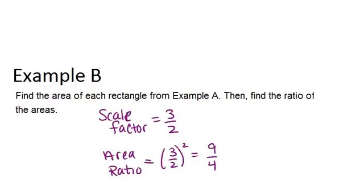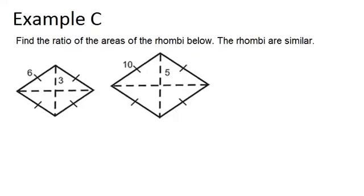Let's go to example C. Find the ratio of the areas of the rhombi below. The rhombi are similar. The ratio of the areas is always the scale factor squared, so let's figure out the scale factor.